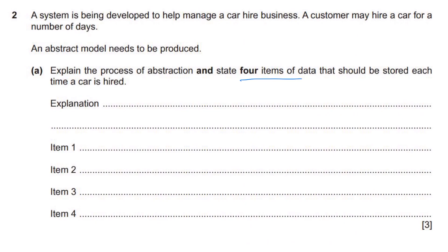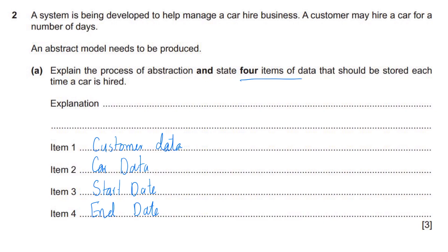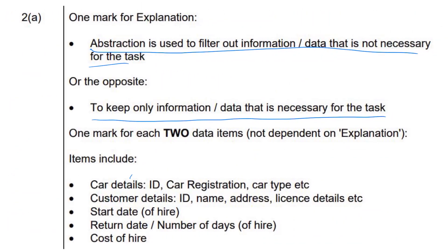Now state four items of data that should be stored each time a car is hired. We have a program dealing with a customer hiring a car for a certain number of days and then bringing it back. Thinking about this from a common sense perspective, first we would need customer data, next we need the car data to keep track of what car is being hired out, then we probably need a start date for when that car is being hired out and an end date for when it should be returned. Indeed, if we go to the mark scheme: car details, customer details, start date, return date, and also cost of hire.